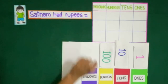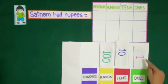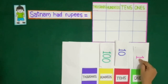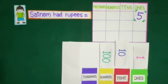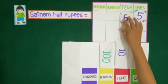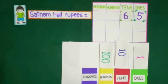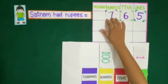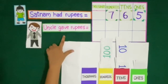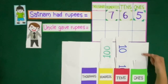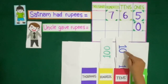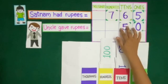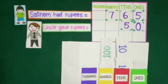Satnam had 765 rupees. So here we have 5 notes of rupees 1, which means 5 at 1's place. Next we have 6 notes of rupees 10, which means 6 at 10's place. Then we have 7 notes of rupees 100, which means 7 at 100's place. Satnam's uncle gave him 250 rupees, which means 0 at 1's place, 5 at 10's place, and 2 at 100's place.